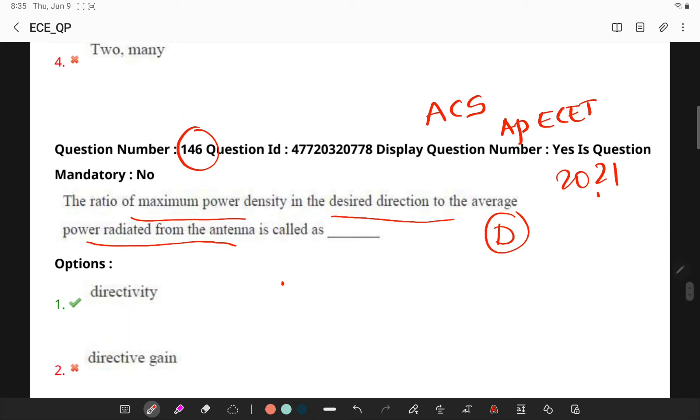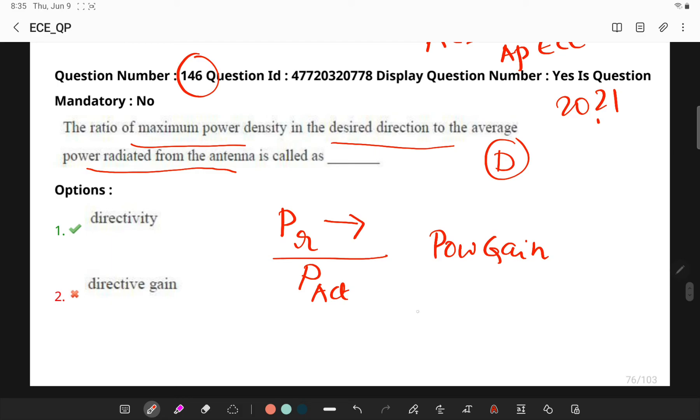Remember, the ratio of the power radiated in a particular direction to the actual power is called power gain, and directive gain is the ratio of the power radiated in a desired direction to the average power radiated from antenna. So maximum directive gain is called directivity.